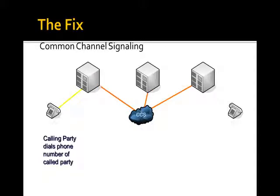You can guess what the solution was: we actually built a separate network. By this time — late 70s, 80s — microprocessing power had gotten inexpensive. We had microprocessors with enough capability that they could do useful work in this environment. The switching matrix on the switch was actually controlled by fairly inexpensive computers. So we could do more complex switching methods, and what they did was build a separate network completely — and it was a packet network. Each of the switches along that path had a connection into this network, and they would exchange information about status of ports.